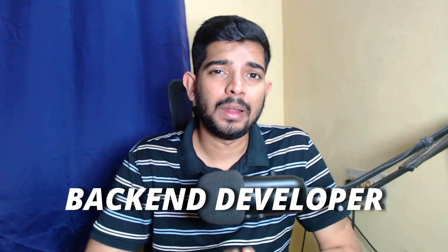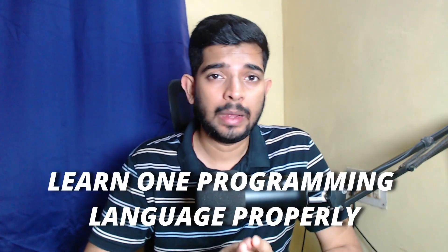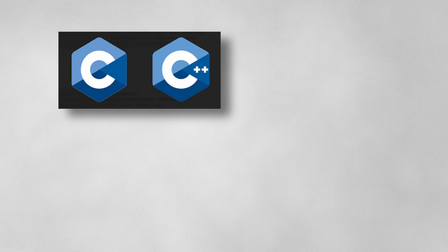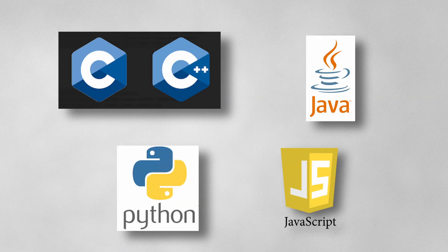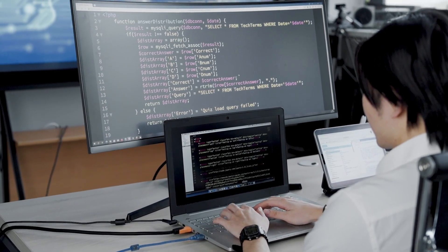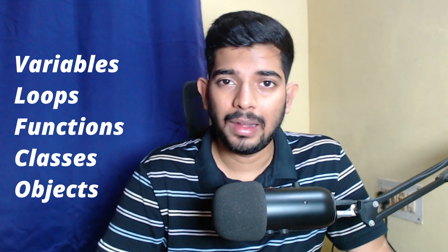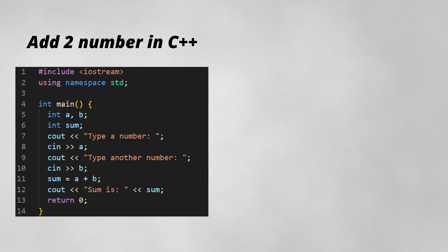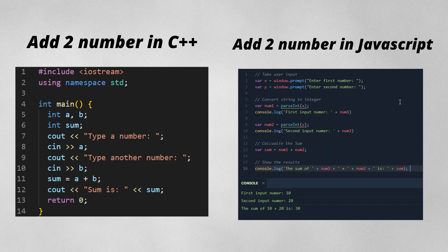First of all, if you want to become a back-end developer, you need to learn one programming language properly. It doesn't matter if you are learning C++, Java, Python, or even JavaScript — just learn one back-end language. Most of these back-end languages will be similar to each other. All the variables, loops, functions, classes, and objects will be the same; concepts don't change from one language to another. Only the syntax might change.